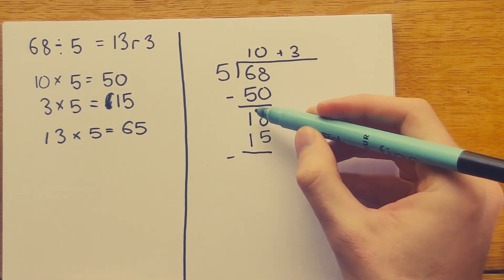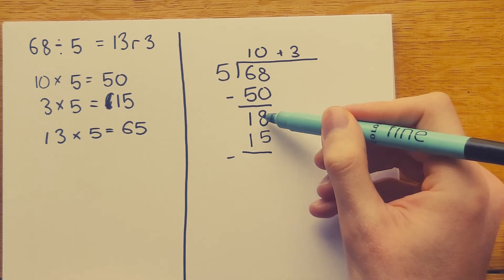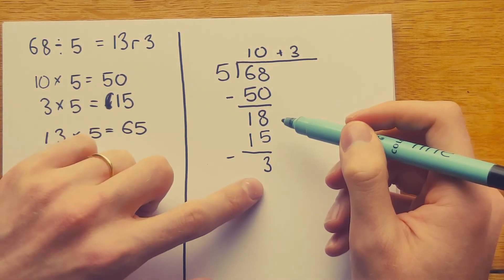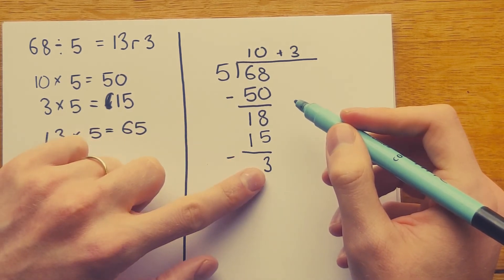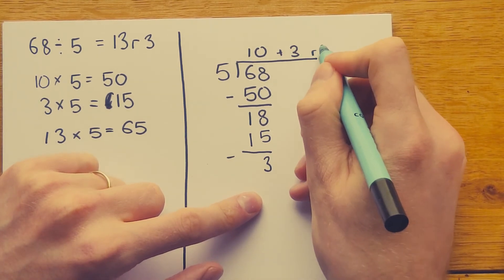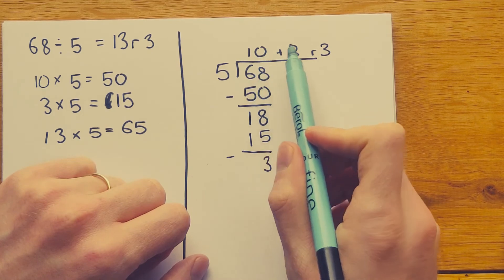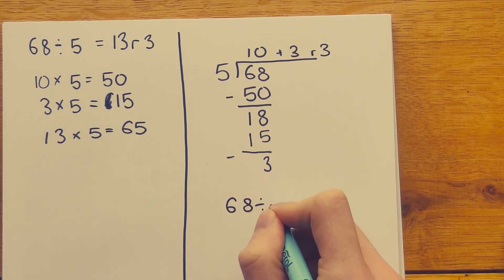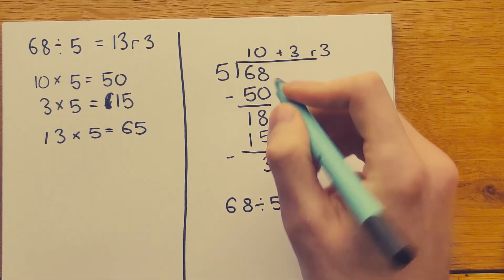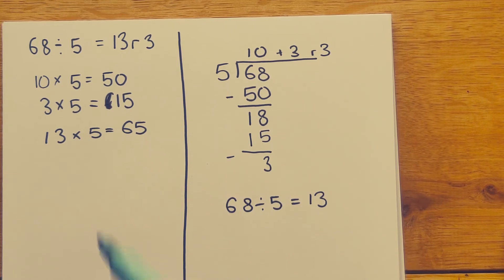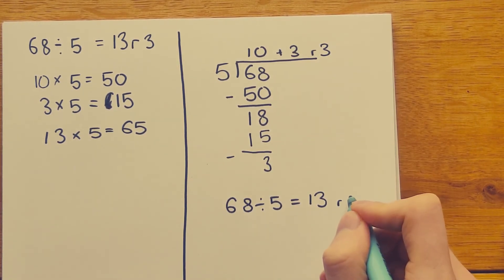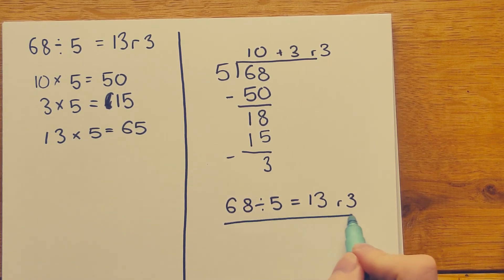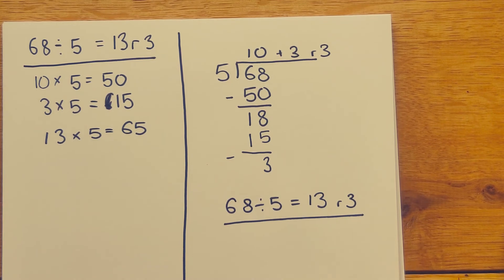We subtract to find the difference: 18 minus 15 equals 3. Can 5 fit into that 3? No — so the 3 is just a remainder. We've got 10 lots of 5 and another 3 lots of 5, which makes 13 lots, with 3 left over. So 68 divided by 5 is 13 remainder 3 — and both methods give us the same answer.